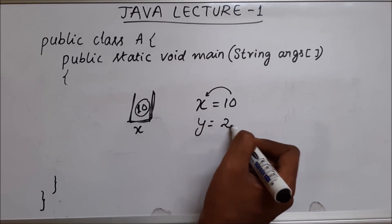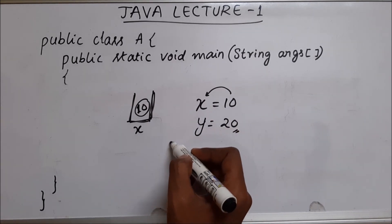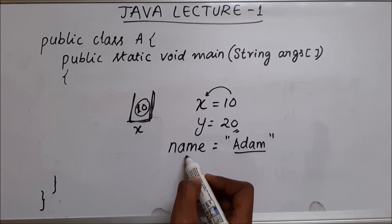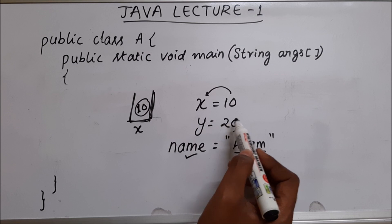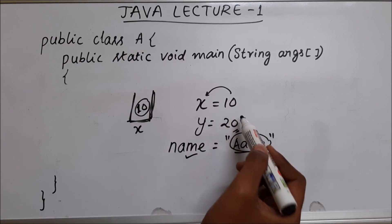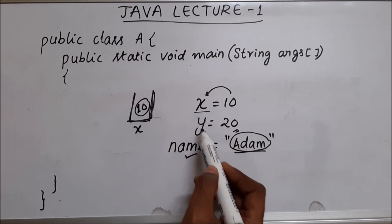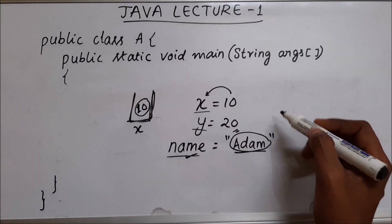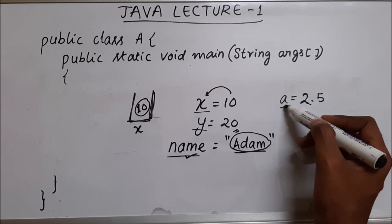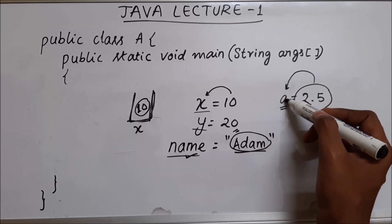We can also say y equal to 20. In this case, y is a variable which is storing an integer value 20. You can also say name equal to Adam. So the word Adam is stored inside the variable called name. Here I have used double quotes to put a word, but when it was an integer I did not use them. You can also have something like a equal to 2.5 — this is also a variable which is having a value of 2.5, put inside a container called a.